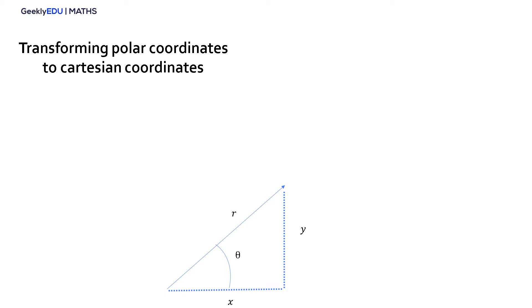Here, if you apply the trigonometric properties that we studied in the video trigonometric functions, we have x = r cos(θ) and y = r sin(θ).